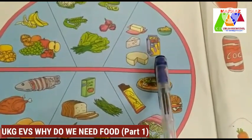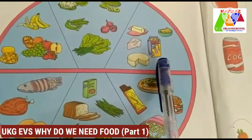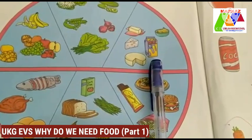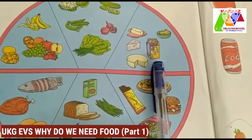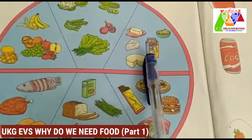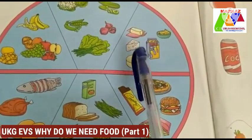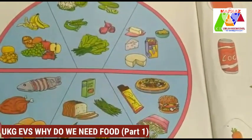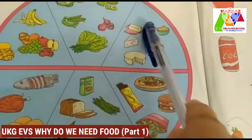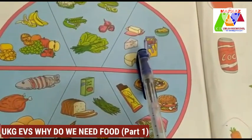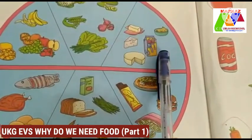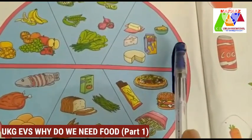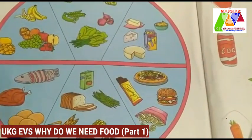Milk is the most nourishing food. We get milk from cows, buffaloes and goats. From milk we get cream, butter, curd, paneer and cheese. These are some milk products.